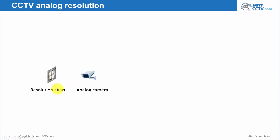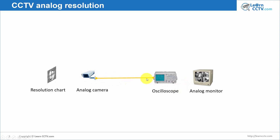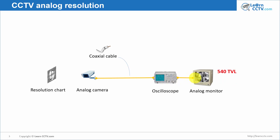In the past, you used to measure analog resolution like this: you have a resolution chart and an analog camera, and then you have an oscilloscope and an analog monitor. You connect a coaxial cable from the camera, and also a coaxial cable from the oscilloscope to the analog monitor. The idea is that you can measure the resolution of the camera using an oscilloscope in a lab setting. You're going to find if the camera is 540 TV lines, 600 TV lines, 700 TV lines, or whatever resolution the camera has.